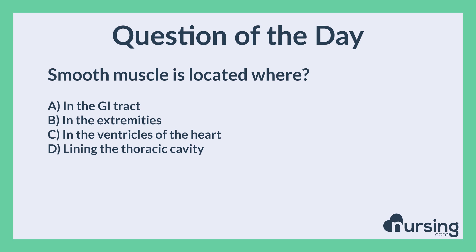Again, smooth muscle is located where? A. In the GI tract. B. In the extremities. C. In the ventricles of the heart. D. Lining the thoracic cavity.